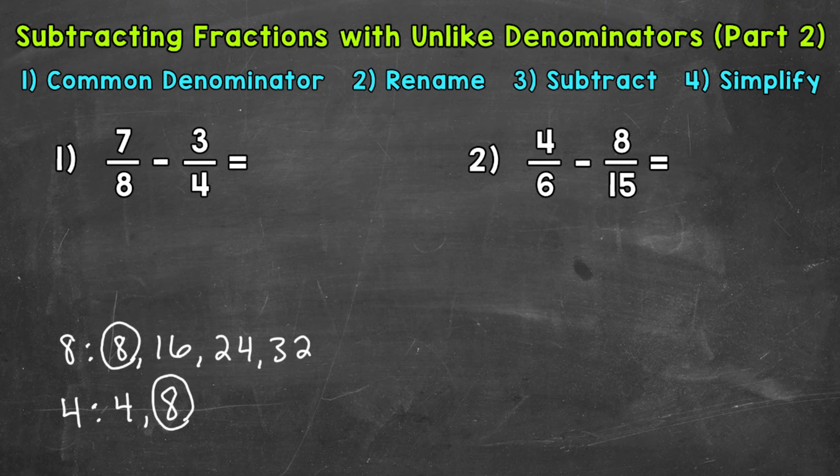So we are ready for our next step. So 8 is going to be our common denominator. I'm going to come back up to the original problem, just underneath, and start to rename these fractions with that denominator of 8. So once I have that common denominator, I need to rename my fractions with that denominator of 8. I'm going to use equivalent fractions in order to do so.